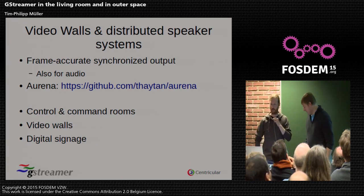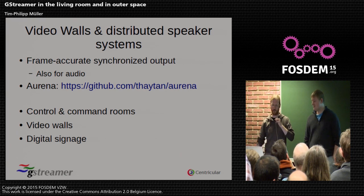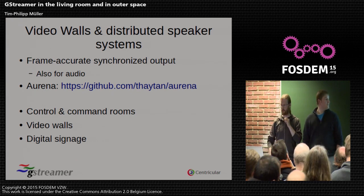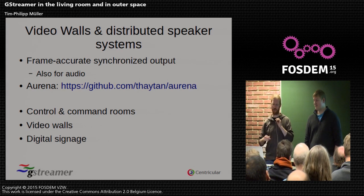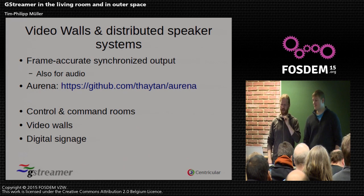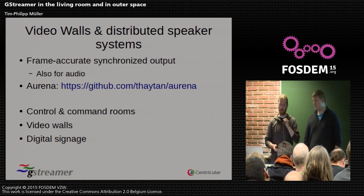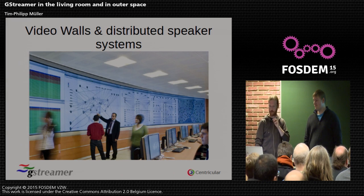GStreamer is also used for video walls and distributed speaker systems. In those cases it's important to have frame-accurate synchronization between all different devices for video, and even more accurate synchronization for audio — all over the network. There's a demo application called Arena that you can use to set this up in your own network. If you look at the code, it's really small, and it allows you to show the same video or audio on many different devices completely synchronized. There's also an Android application using it. There are also commercial products used for control rooms, command rooms, video walls, and digital signage.